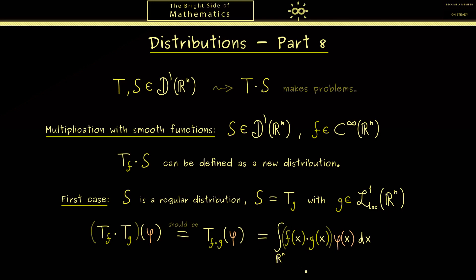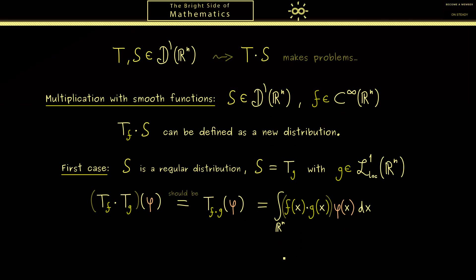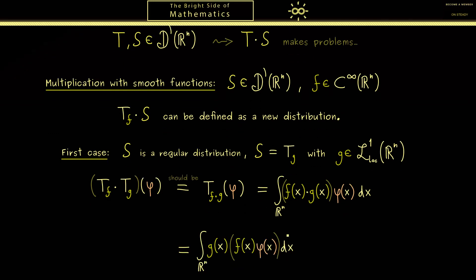Then the next simple idea is that we just push the function f to the function φ. Of course this does not change the integral at all. However, it allows us to interpret this construction as something new. Namely, you should see that the function f times the function φ is again a test function, simply because the product gives us again a C infinity function and we don't lose the compact support of the function φ. Therefore this integral is then the distribution T_g applied to the test function f times φ.